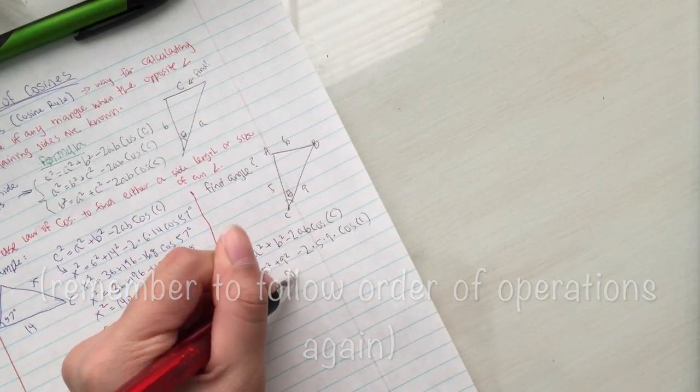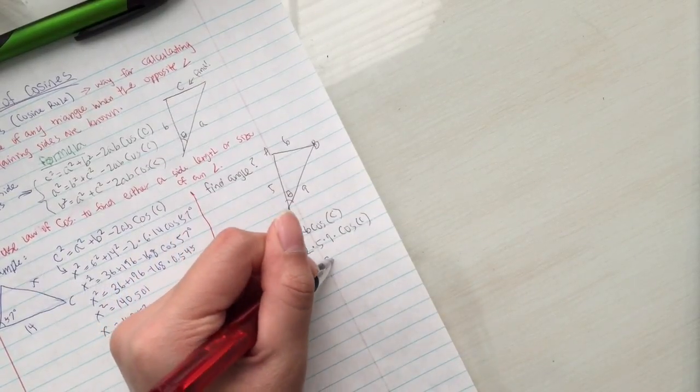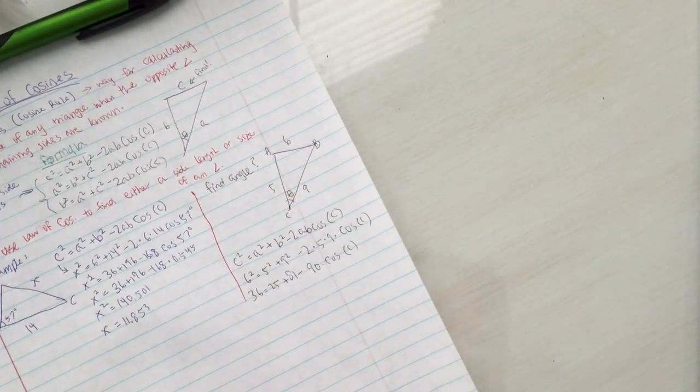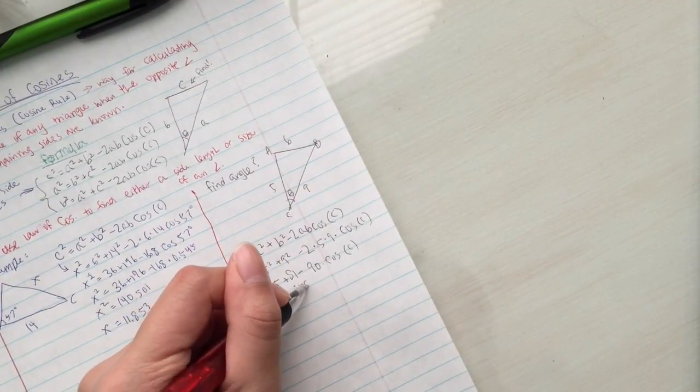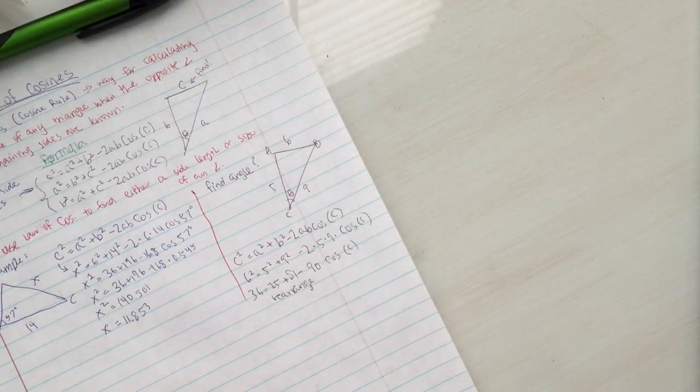If you keep on simplifying this, you will get 36 equals 25 plus 81 minus 90 times cosine of c. You can rearrange this to solve the equation.